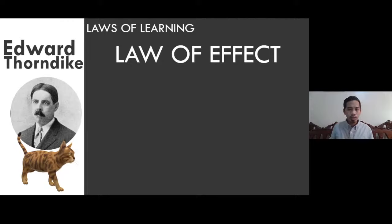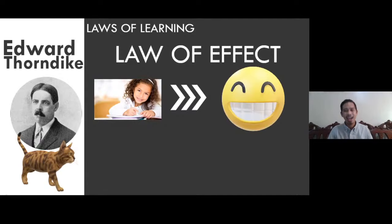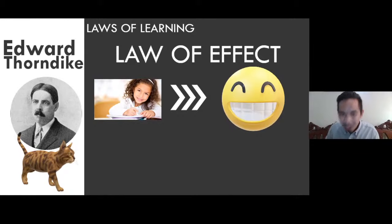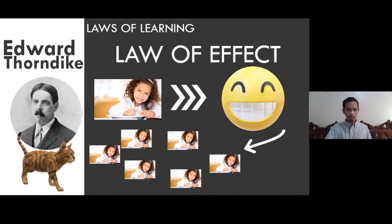In the next trial, Thorndike observed that the cat found the solution faster than before, and with food present as reward, the cat escaped even more quickly. From this experiment, Thorndike derived three laws of learning. The first is the Law of Effect: if the effect of an action is positive, we will repeat it. For example, since you are learning from this webinar, you'll keep watching webinars — because you realize it's meaningful and well worth your time.